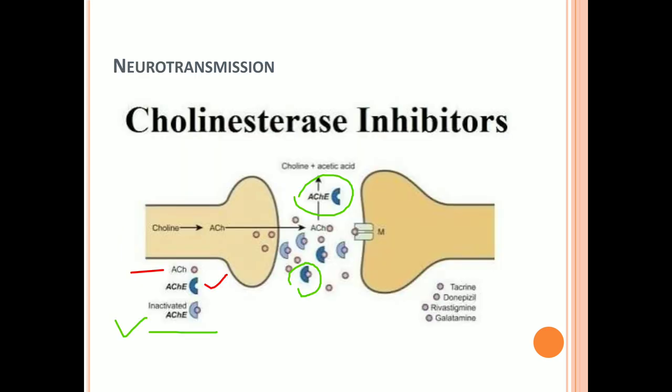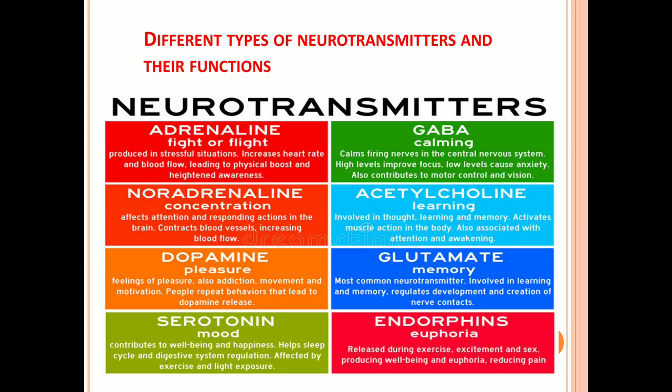Regarding the mechanism of cholinesterase inhibitors: drugs like rivastigmine bind with acetylcholinesterase — shown in green in the diagram. Rivastigmine binds with acetylcholinesterase and prevents it from degrading the acetylcholine released from the pre-synaptic nerve into the synaptic cleft. This allows acetylcholine to bind with the receptor on the post-synaptic nerve, causing normal brain function including memory enhancement.